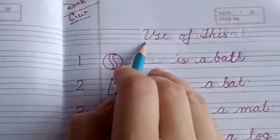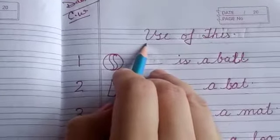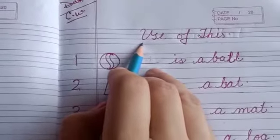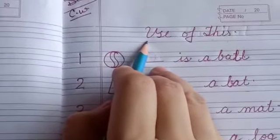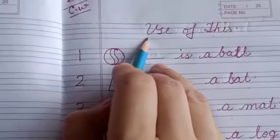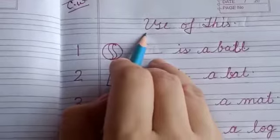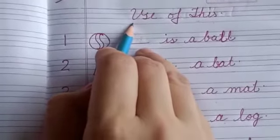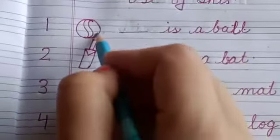Today I am going to tell you about a new concept, that is 'this.' We can use 'this' when a person, animal, or object is only one. For example,